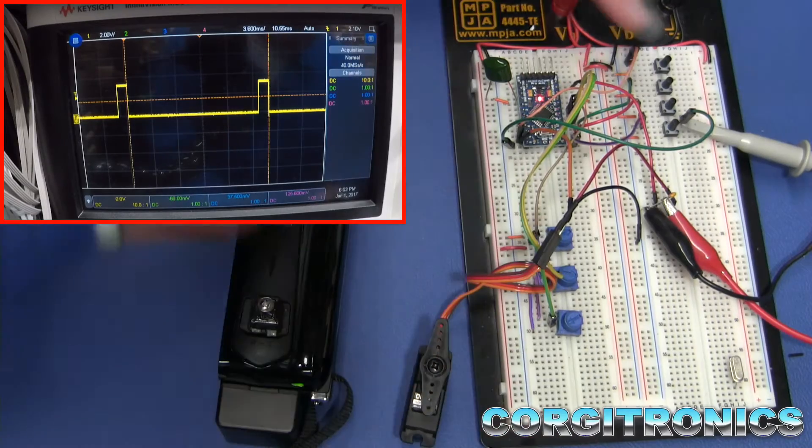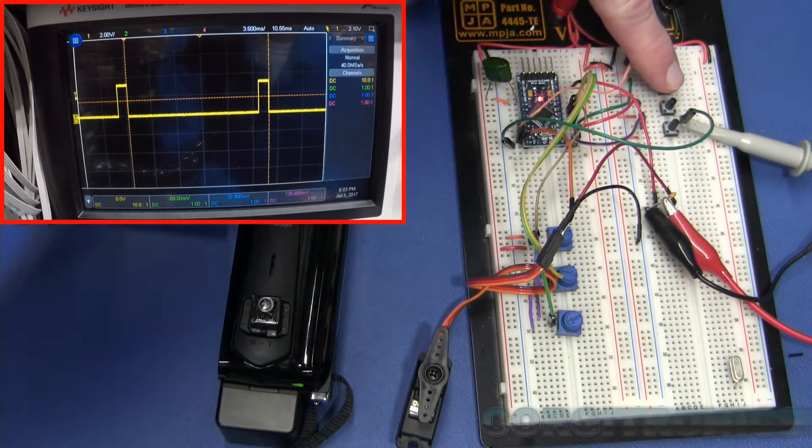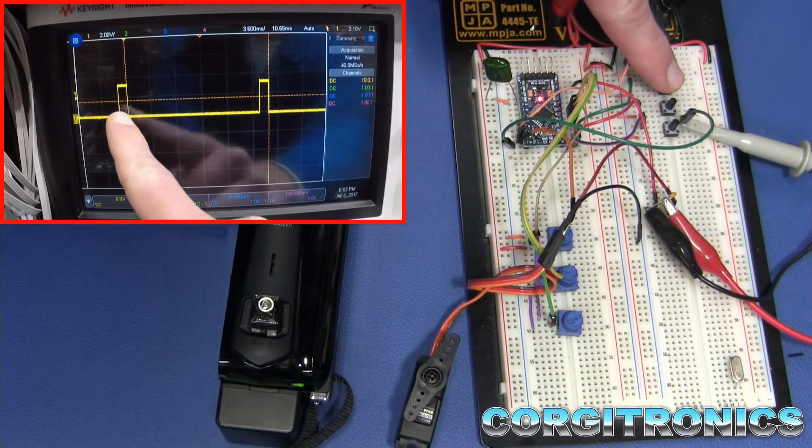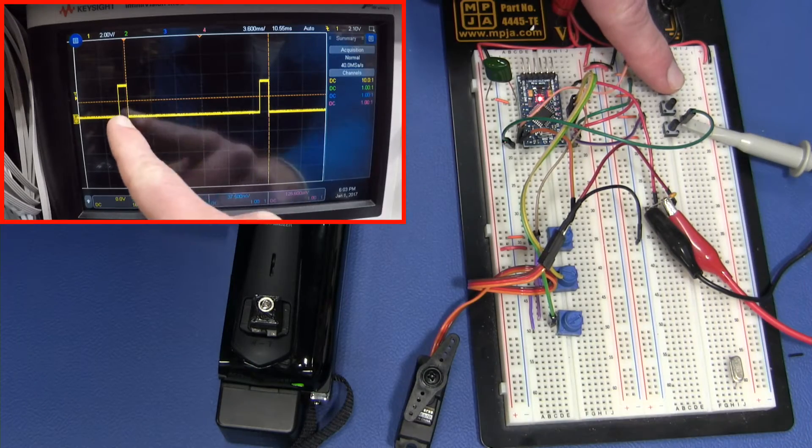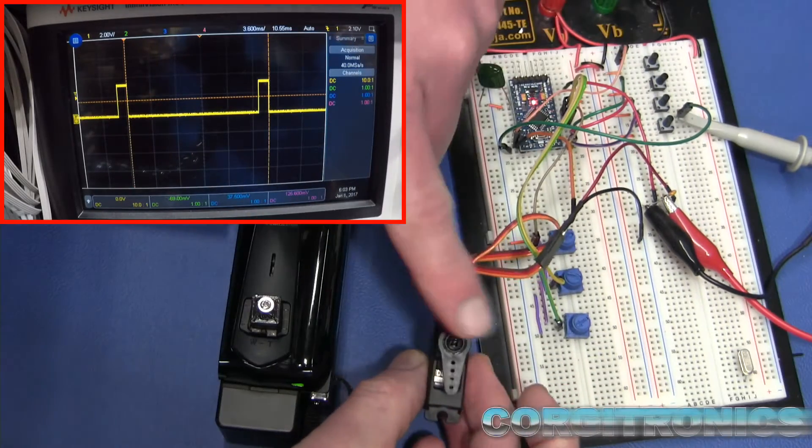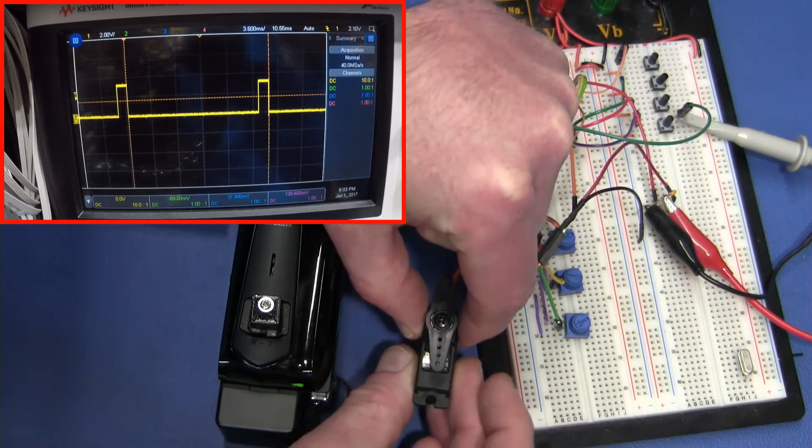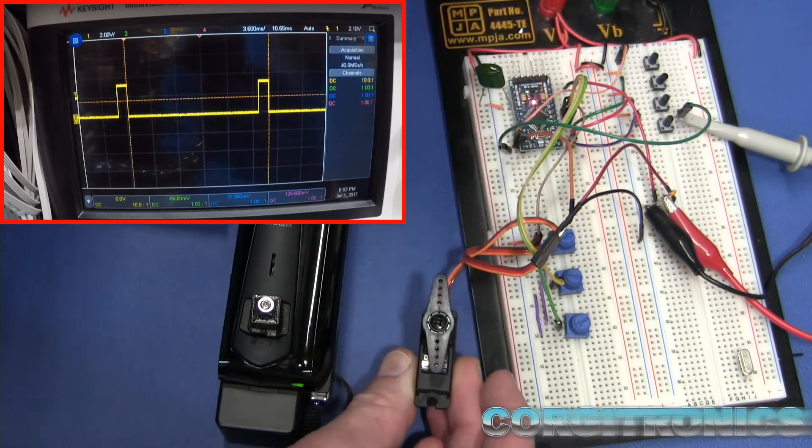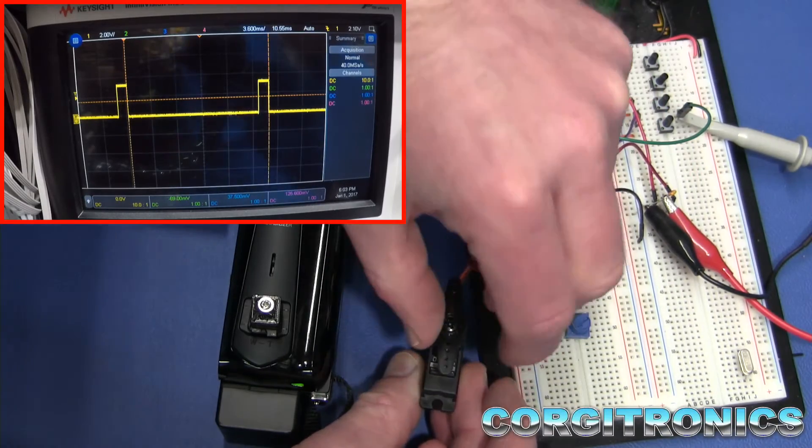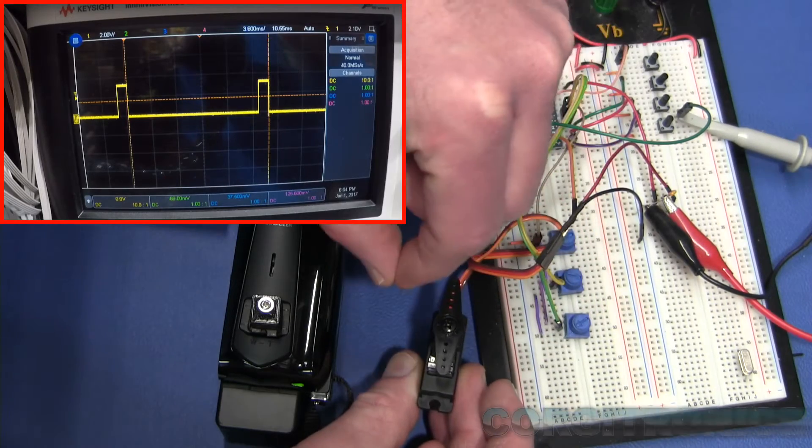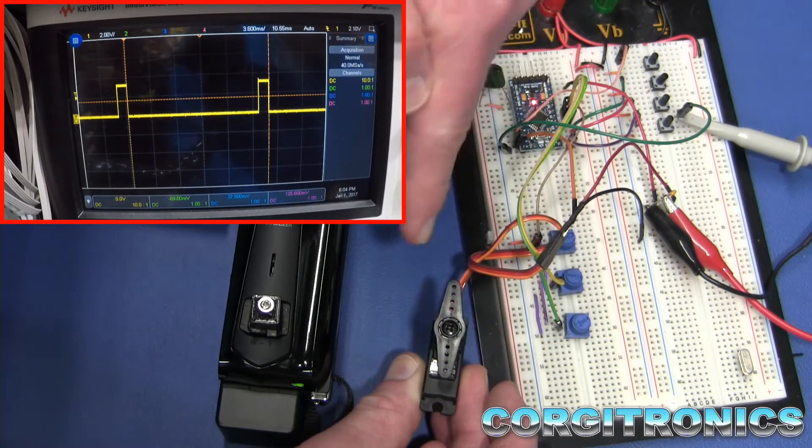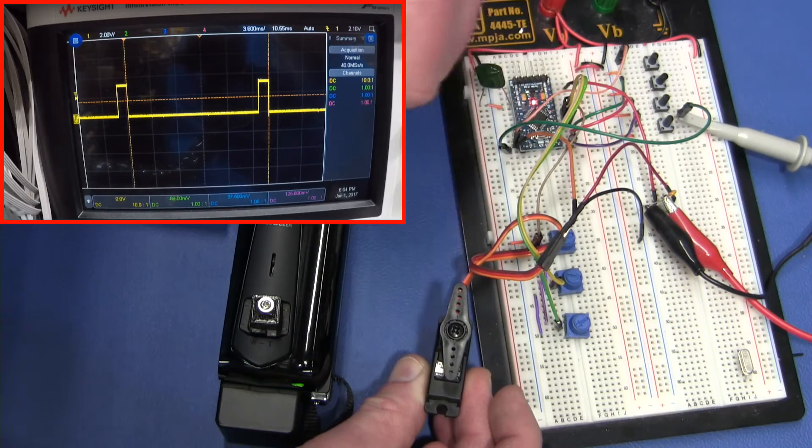The way pulse width modulation works, this little input signal is read by circuitry in here. And then there's a little potentiometer inside of this that senses the servo position. And it creates a little feedback loop so that that pot is set to match whatever the pulse width is coming in.